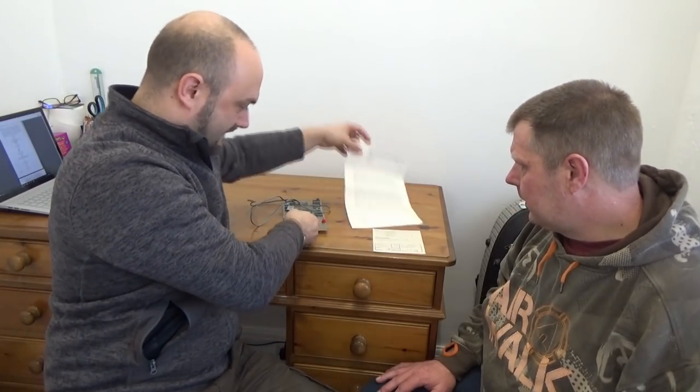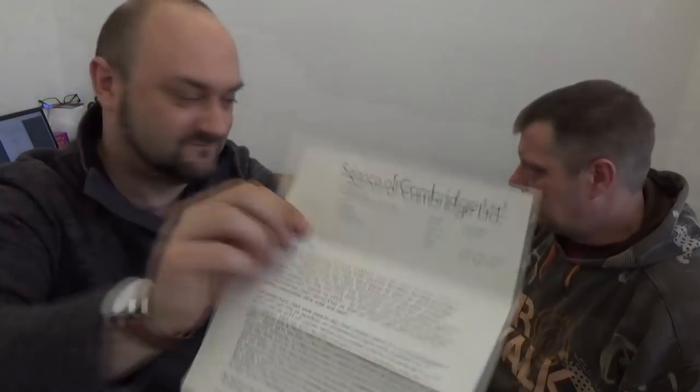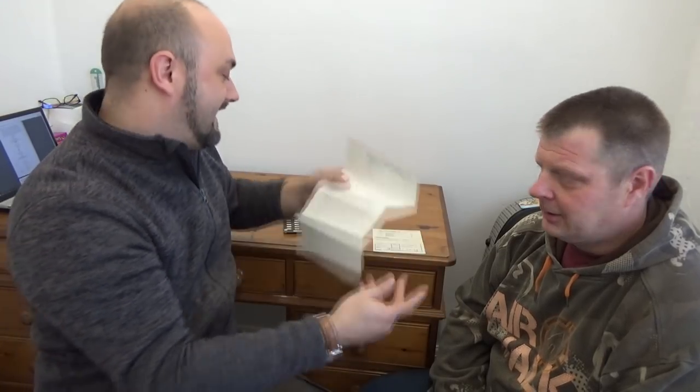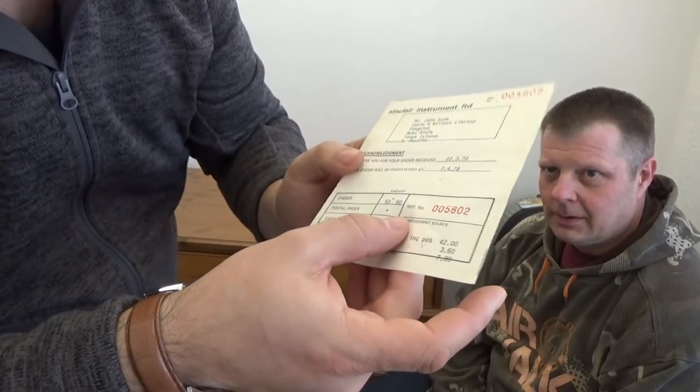Anyway, okay, so there we go. We've got loads of paperwork with it, which is lovely. This is actually quite amusing. Dear Sir, owing to continuing delivery problems with the Mark 14 printed circuit boards, we regret that we have been unable, to date, to dispatch your order. Several weeks ago, steps were taken to obviate this problem by placing orders with two other manufacturers of printed circuit boards. So basically they're blaming it all on the PCB manufacturers. And here's the very original receipt for it, which is reference number 005802.